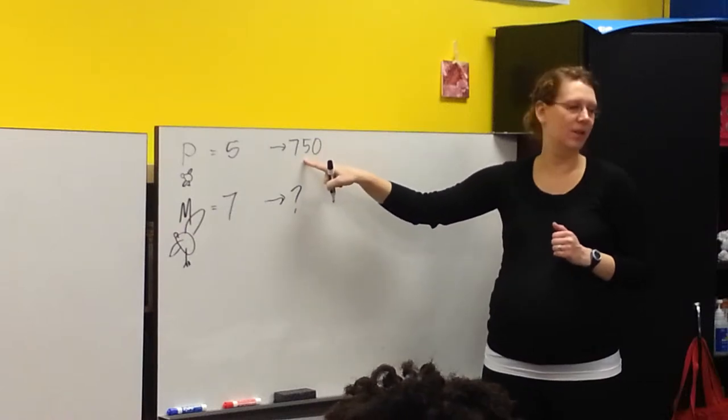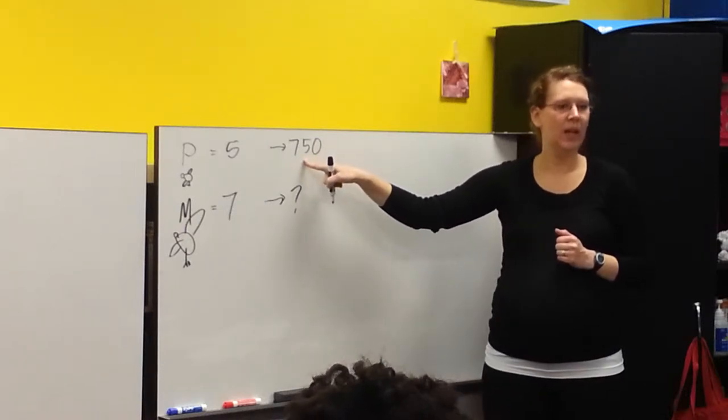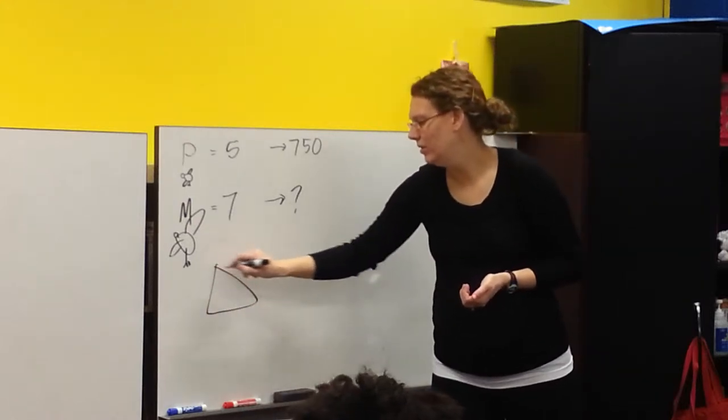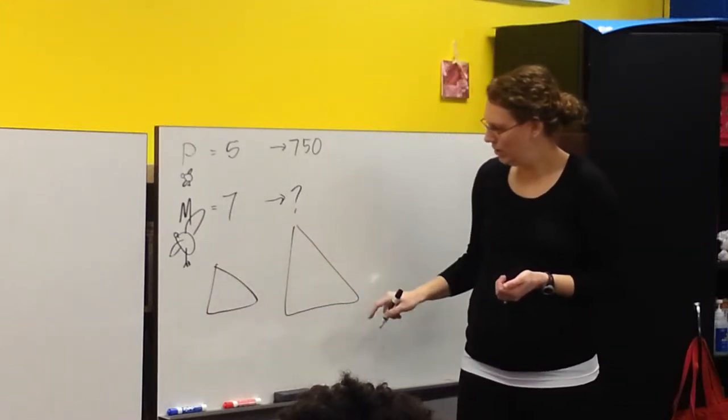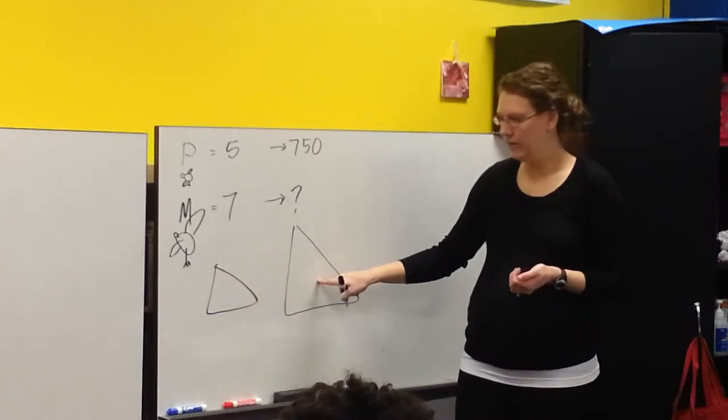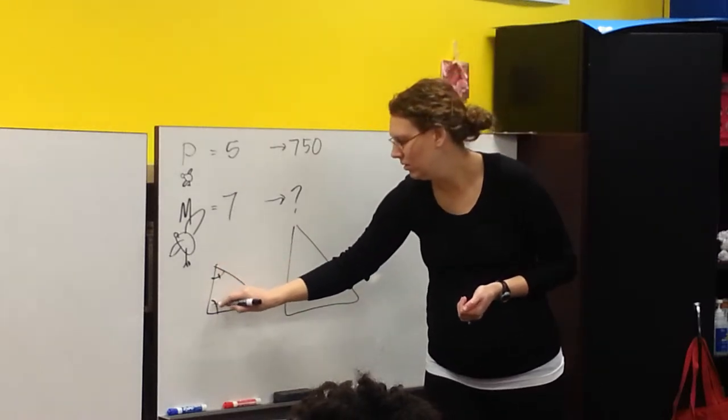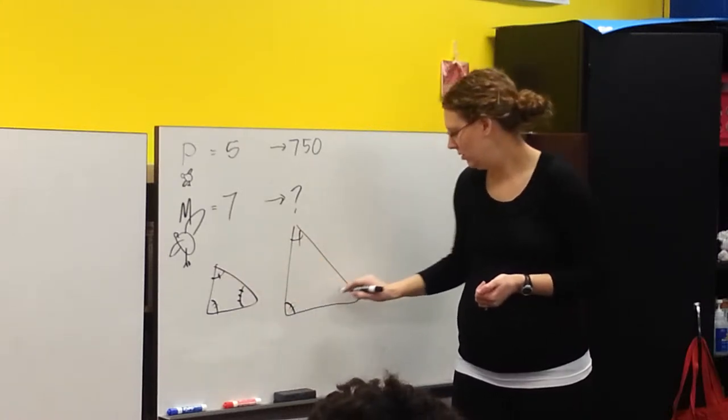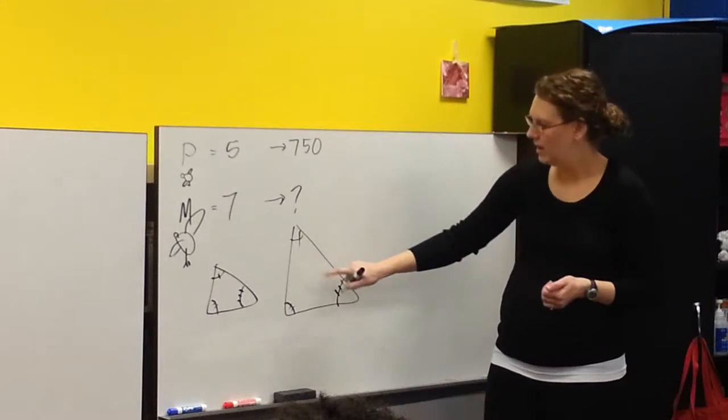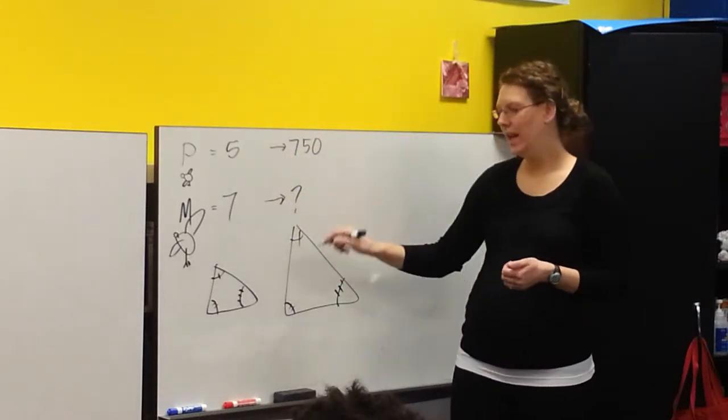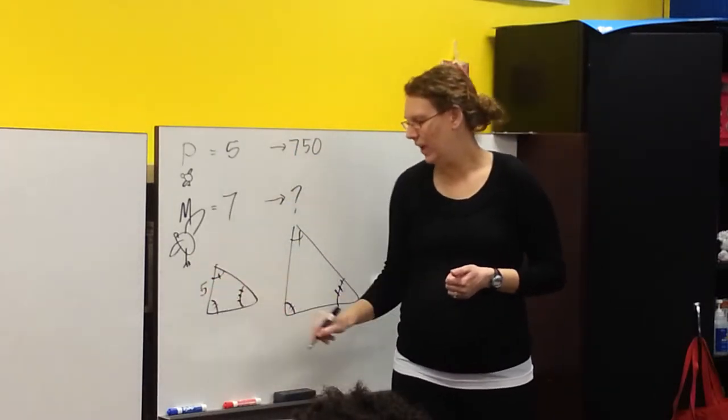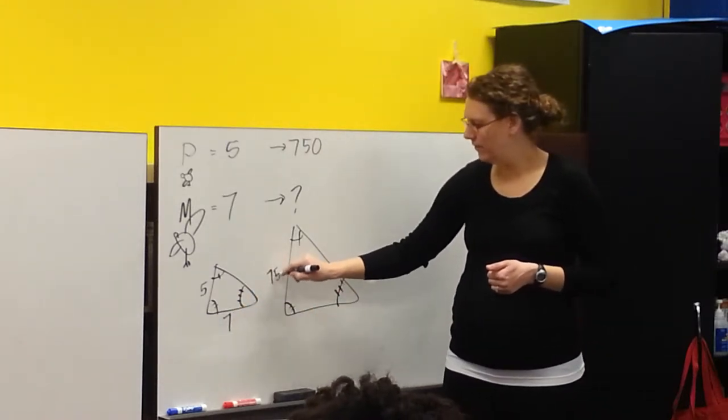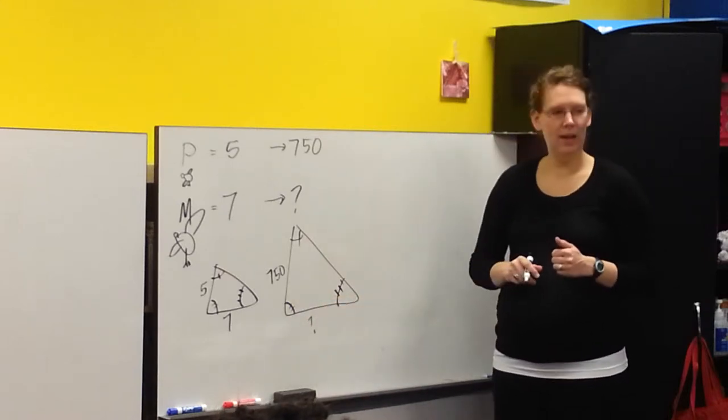How many macaws were there when the parrots were 750? How many macaws were there when there were 750 parrots? So the reason we did similar triangles yesterday, you guys remember, you have this triangle and this triangle. This is the smaller version of this, right? So this is kind of like saying one side of the triangle is 5, one side of the triangle is 7. And then on this triangle you've got 750, and what is this one?